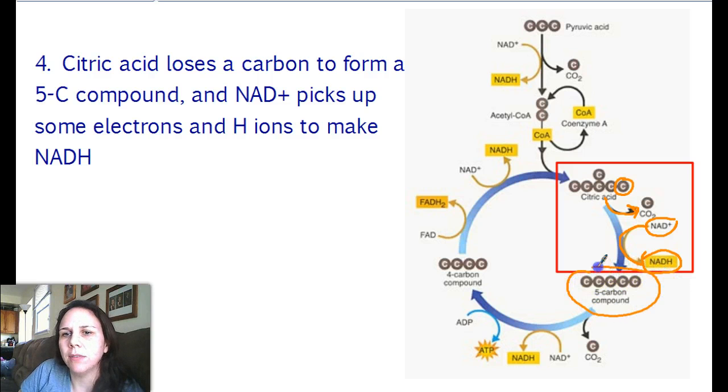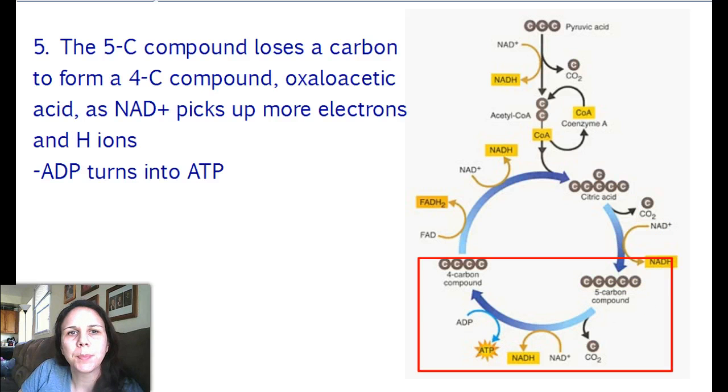That results in a five carbon compound. This five carbon compound is also going to lose a carbon in the form of carbon dioxide. Do you see why we breathe out so many carbon oxides? And then what's left is a four carbon compound. This four carbon compound is going to have NAD+ combine, pick up some more electrons to become NADH. ADP is going to come along and pick up a phosphate group to become ATP.